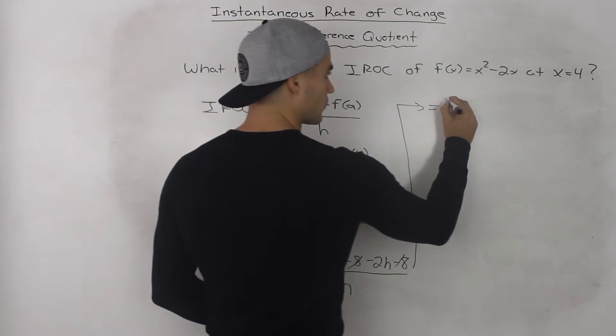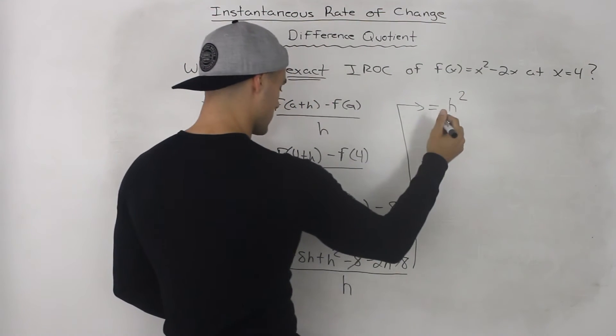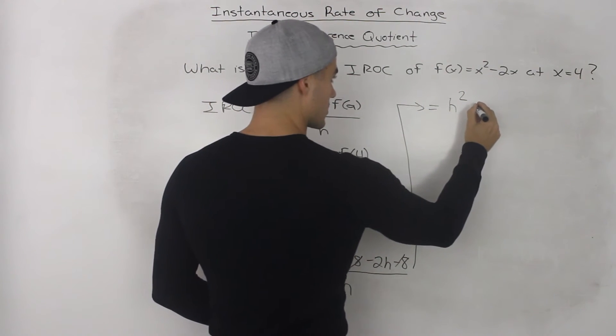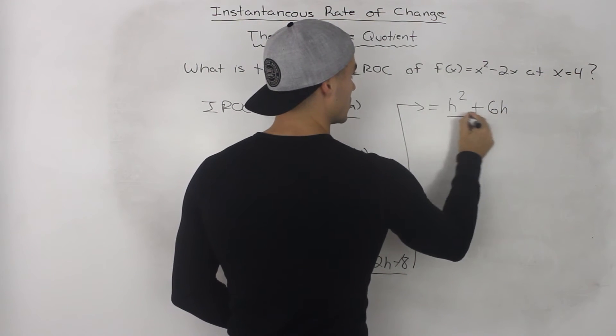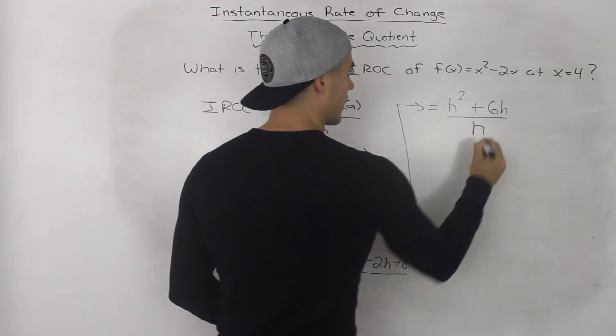So in the numerator, we would be left with h squared plus 6h all over h.